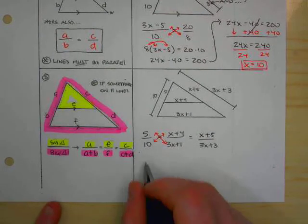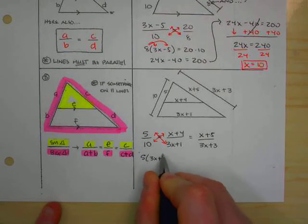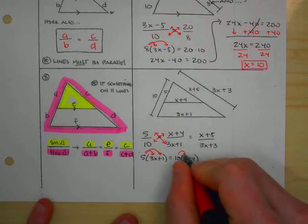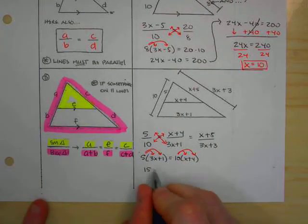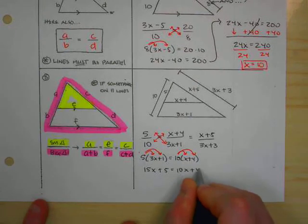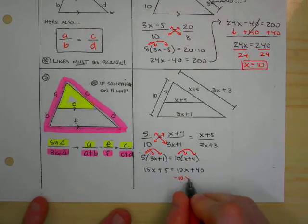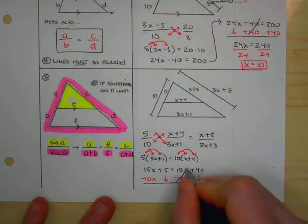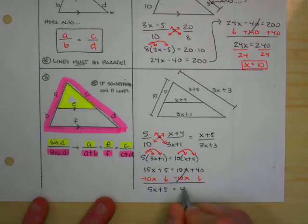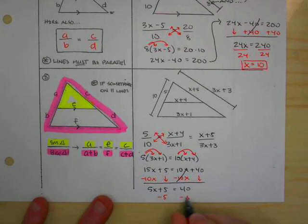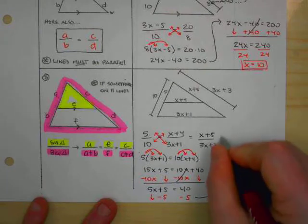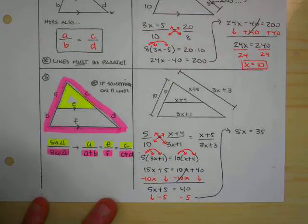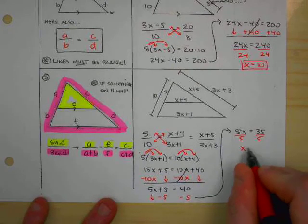So, here I'm going to get 5 times 3X plus 1. And I'm going to set that equal to 10 times X plus 4. When I distribute in both of these places, I get 15X plus 5 is equal to 10X plus 40. Subtract 10X from both sides. These two will cancel. And I get 5X plus 5 equals 40. Subtract 5 from both sides. 5X comes down. I'm going to move this up here. And I get 5X equals 35. And finally, if I divide both of those sides by 5, I get X equals 7.